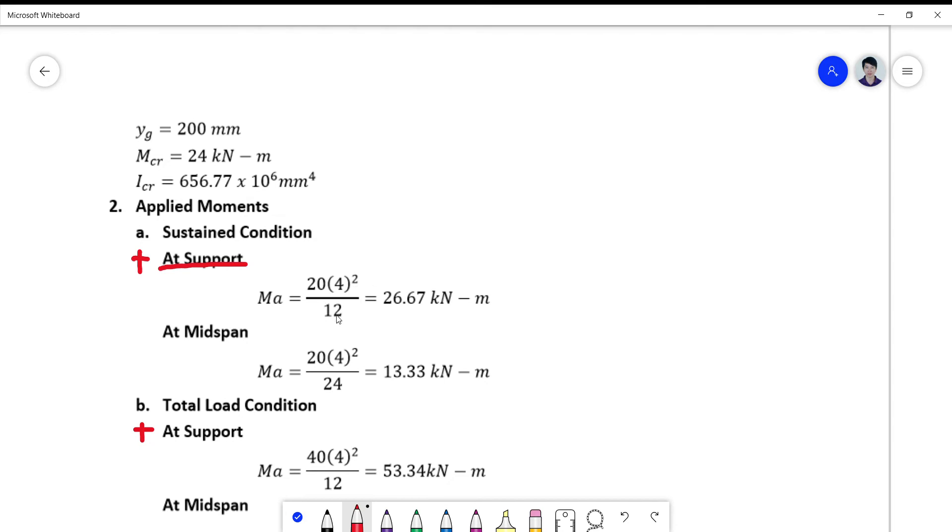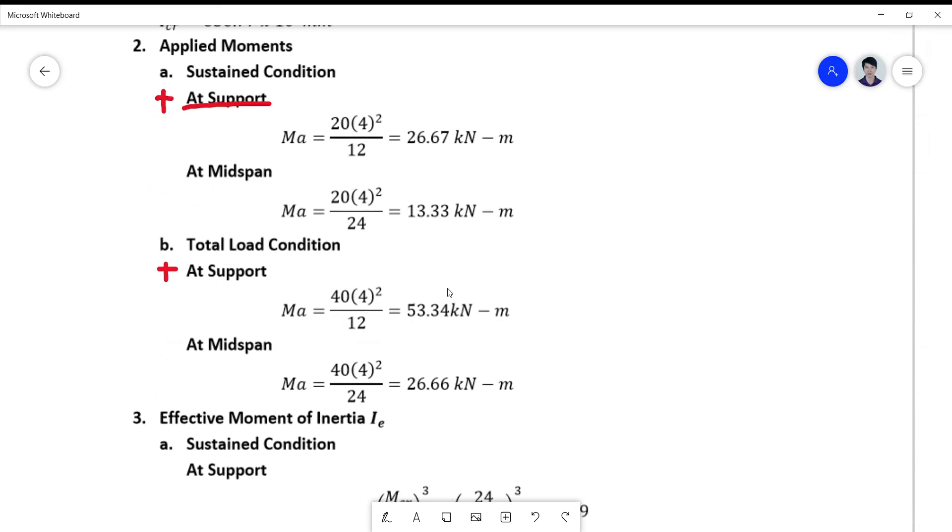So it's WL squared over 12, WL squared over 24. They are actually related in terms of 50%. The moment of the midspan is 50% of the moment of the support. So it's true with your total load condition. There's an additional support moment which we need to consider in computation of your effective moment of inertia.